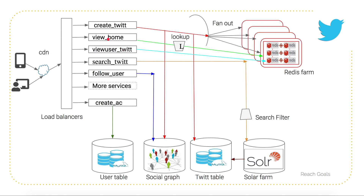I want to discuss in detail the two services: create tweet and view home. View home is a time series on the home screen — as soon as you log in, you see tweets posted by the people you follow. When a user creates a tweet, the message is fanned out. It goes into Redis, which figures out who your followers are, then sends your tweet messages and puts them into the cache for each follower.